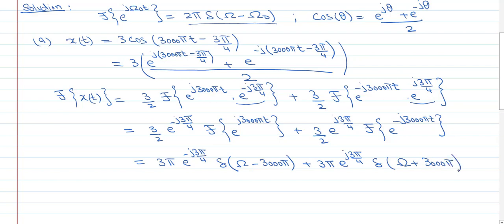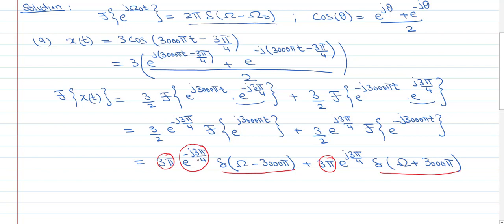This is the Fourier transform expression for the cosine, and it makes natural sense. The Fourier transform has two impulses: one at 3000π and the other at −3000π. The area of those Dirac deltas is 3π for both, and they are phase-shifted by −3π/4 and +3π/4 respectively.